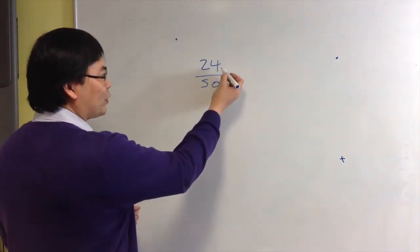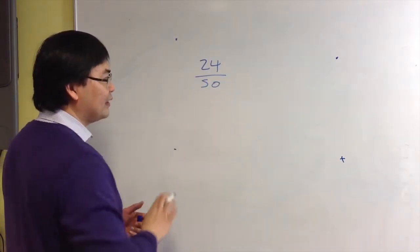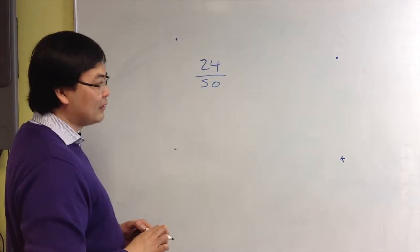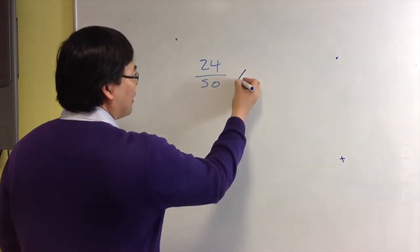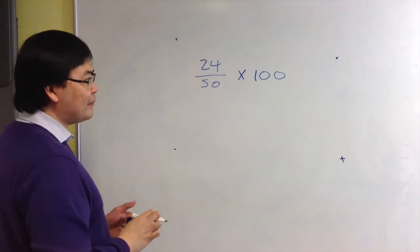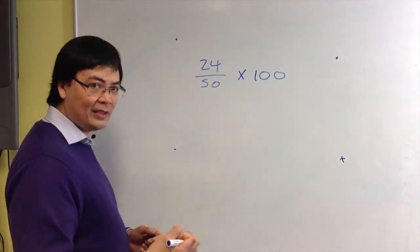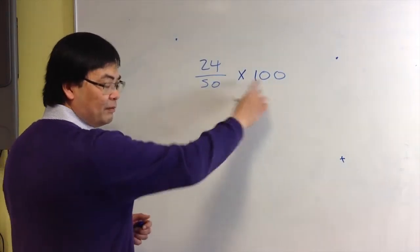Now to express 24 as a percentage of 50, you simply write it as a fraction and then multiply by 100. This is important because you can convert any fraction into a percentage when you multiply by 100.